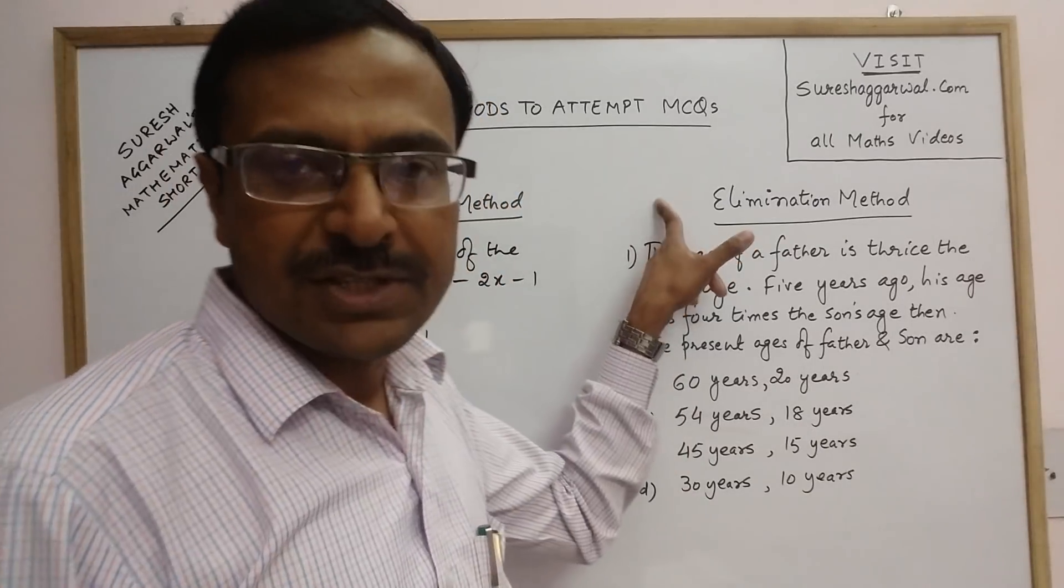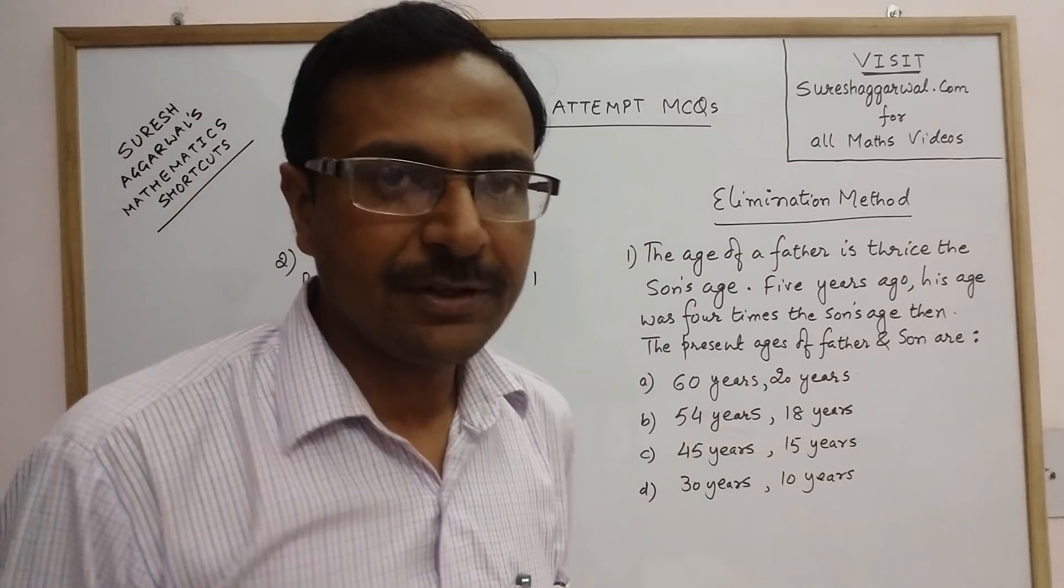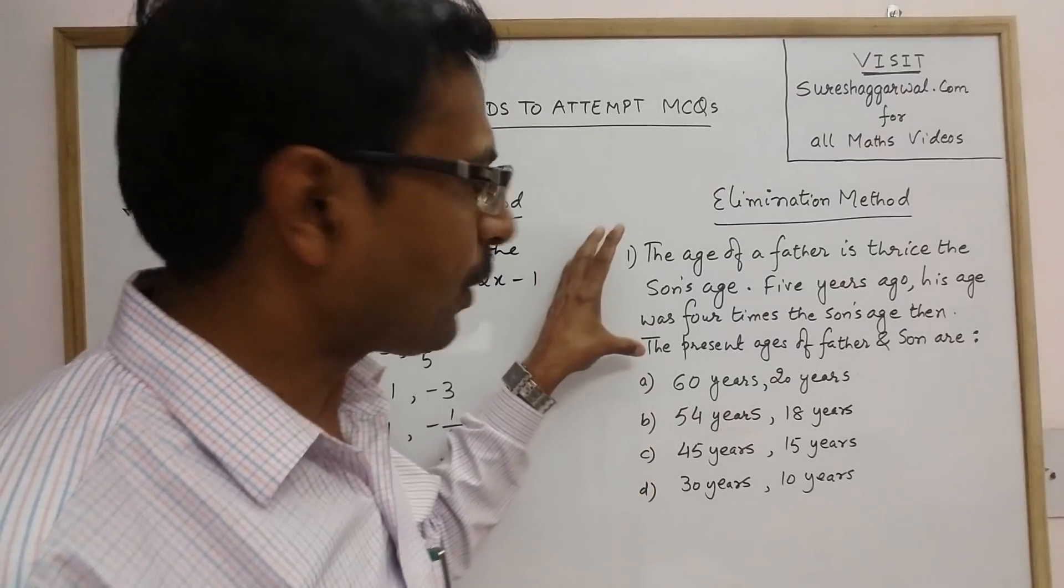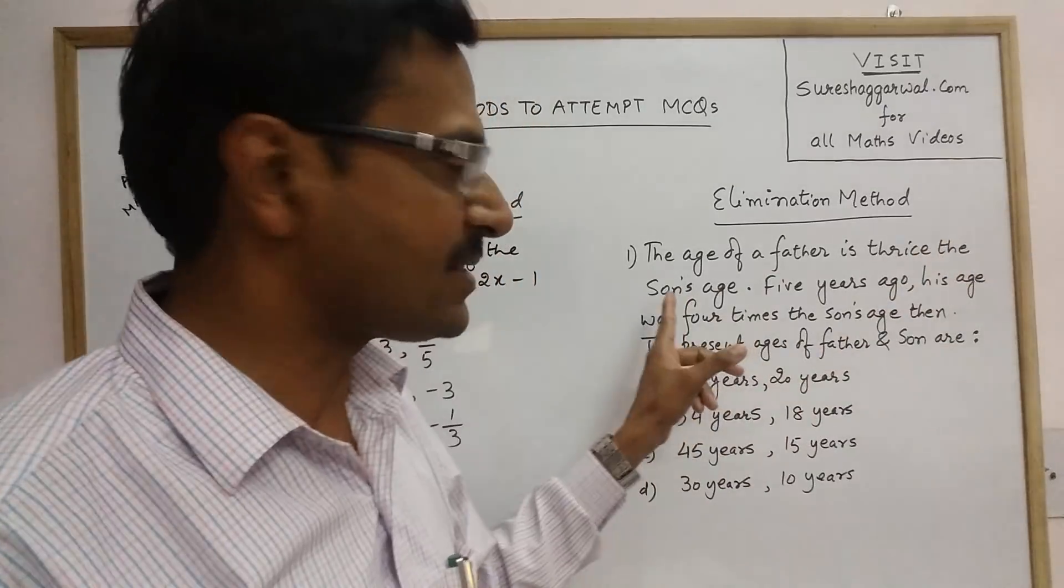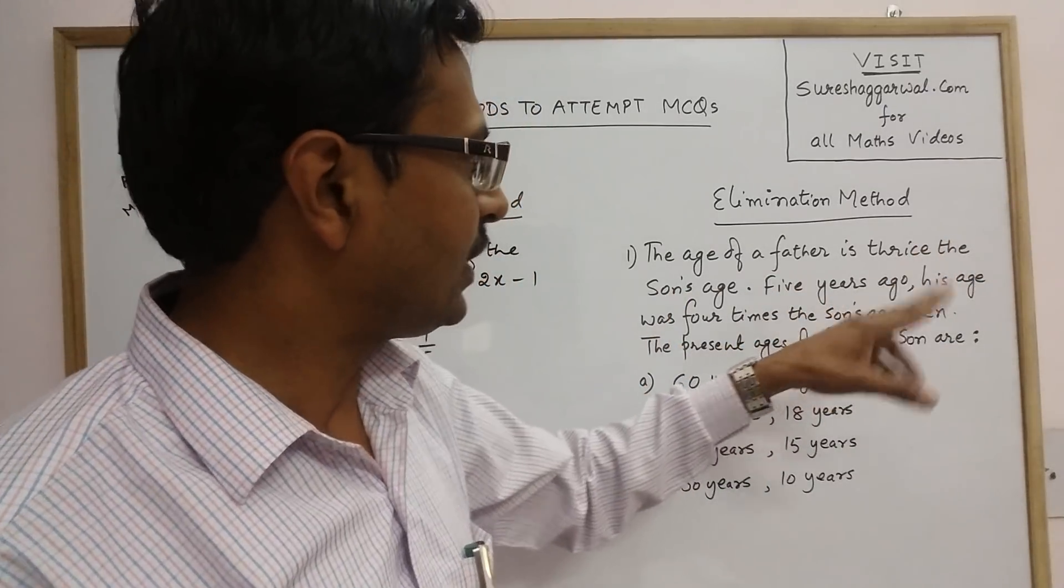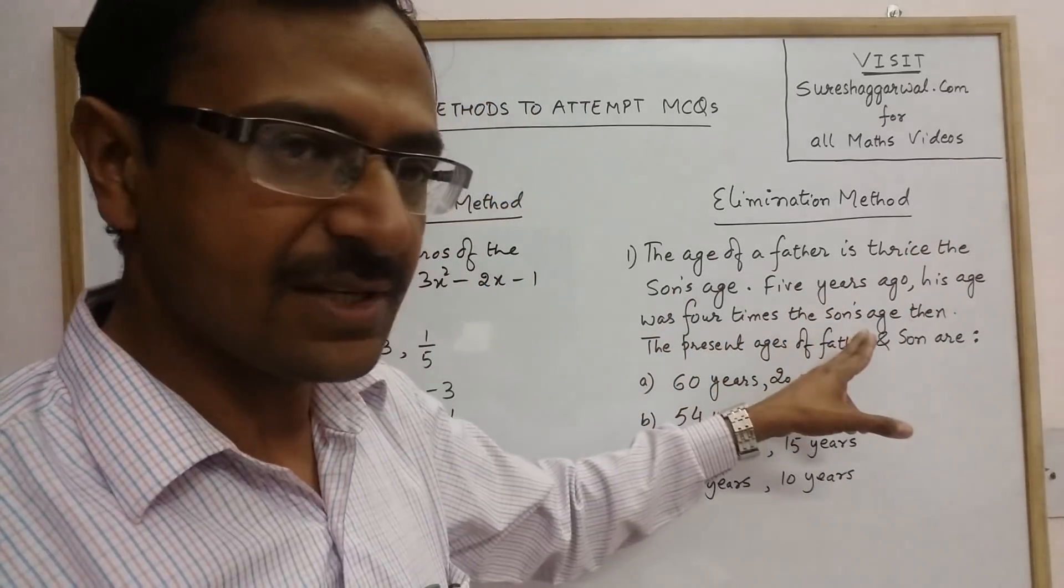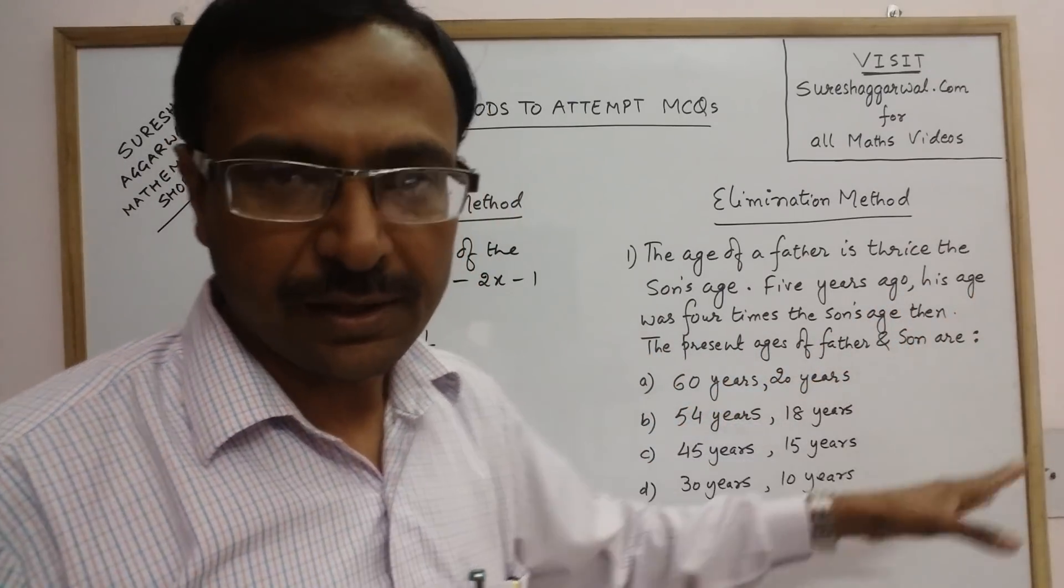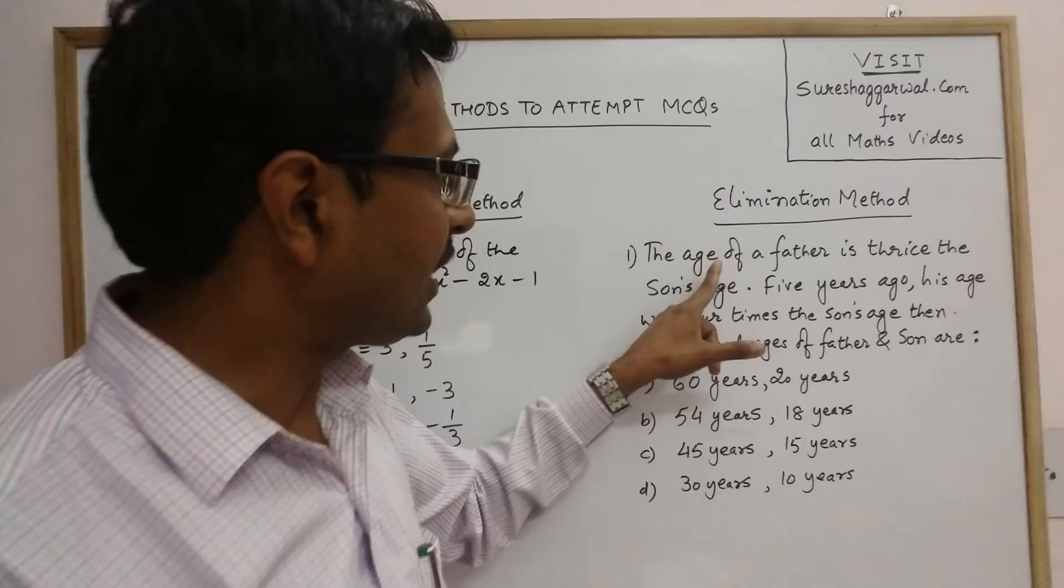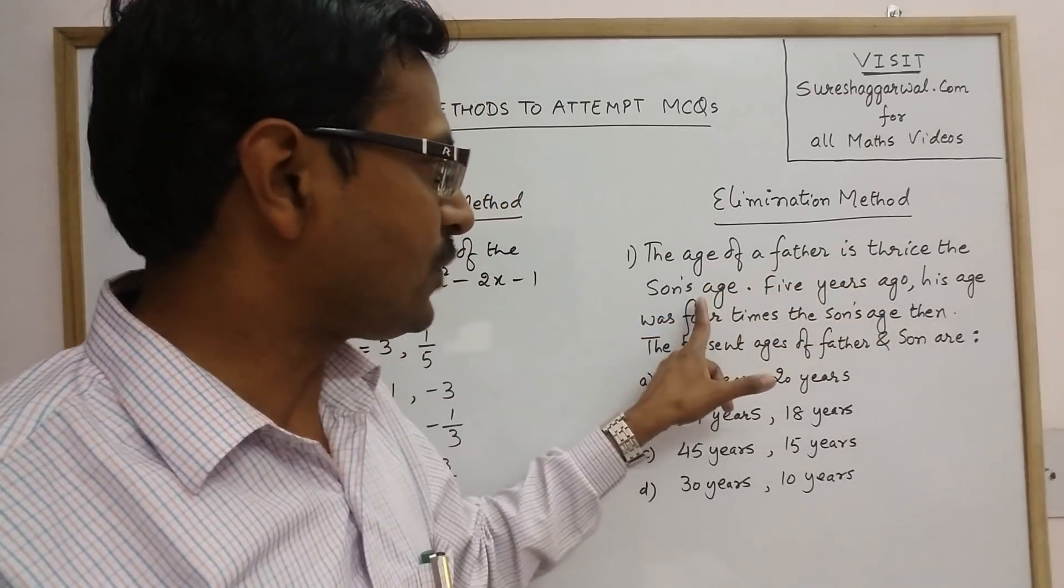The first method which I am going to tell you is the elimination method. Now see, this is a problem based on ages. The age of a father is three times or thrice the son's age. Five years ago, his age was four times the son's age. Then, the present age of father and son are.